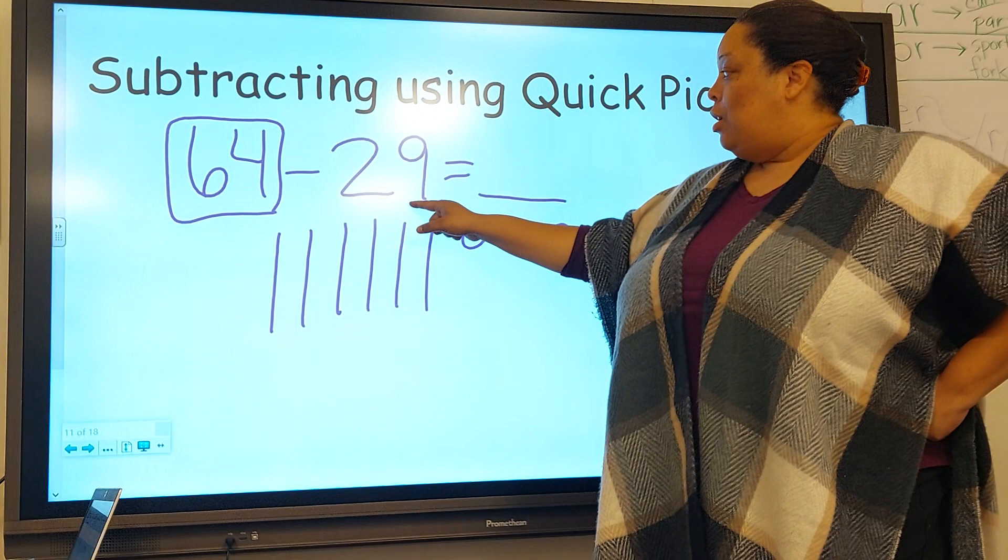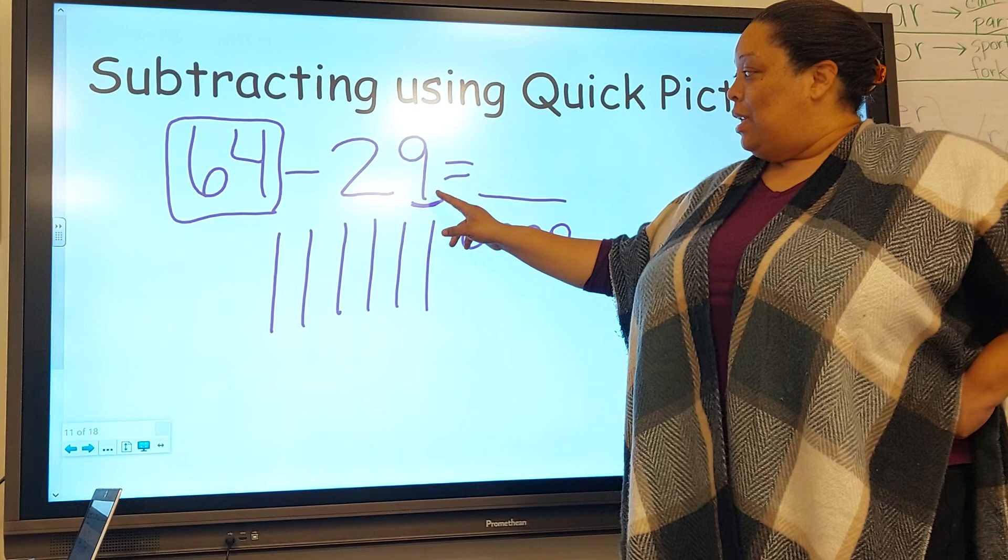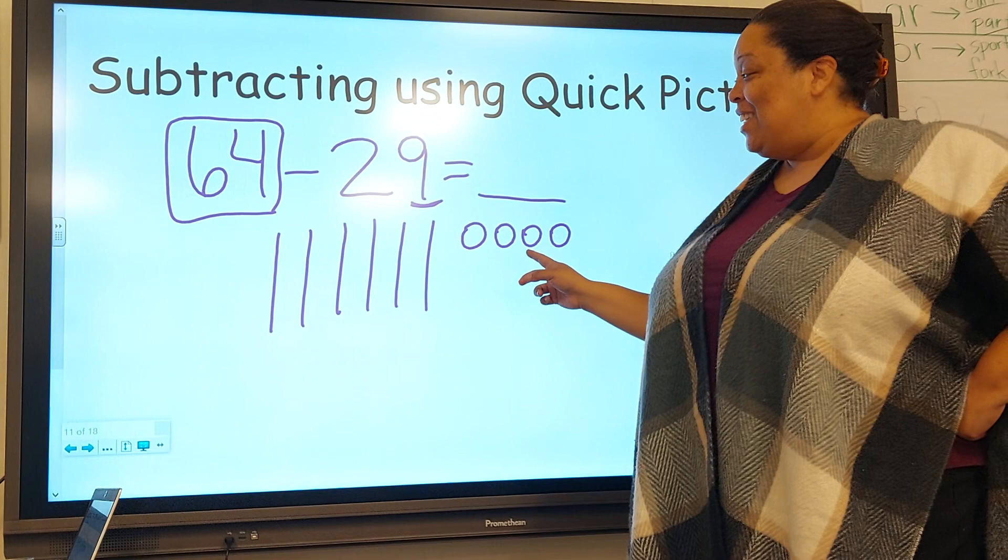The ones. So we're starting at the ones, and there's nine ones there that I need to take away. I'm gonna take away 29, but we're starting with the nine ones. Oh, I don't have enough ones, so we're gonna go...